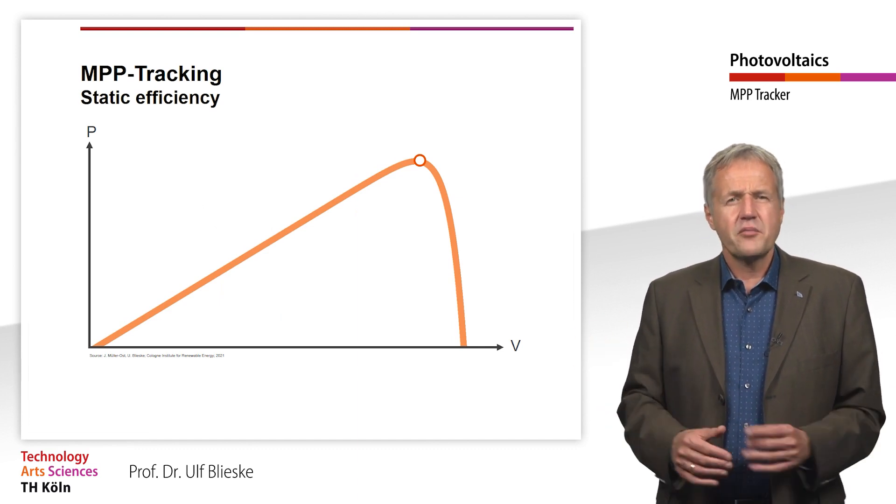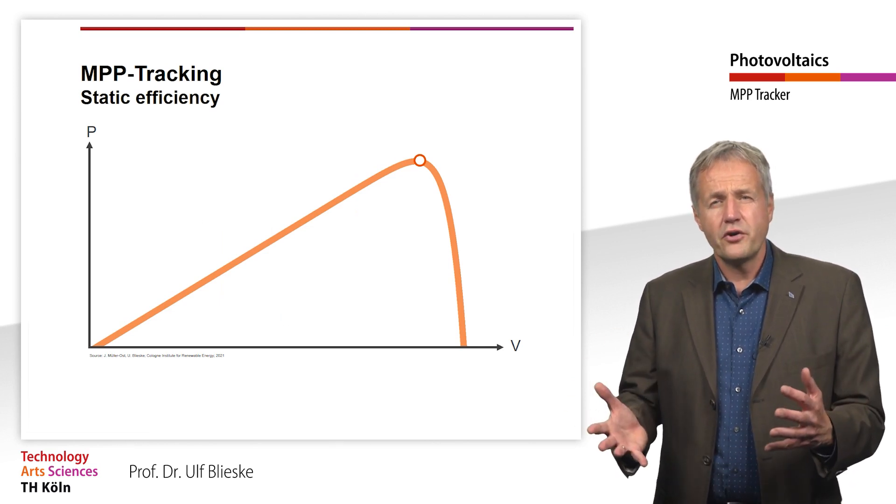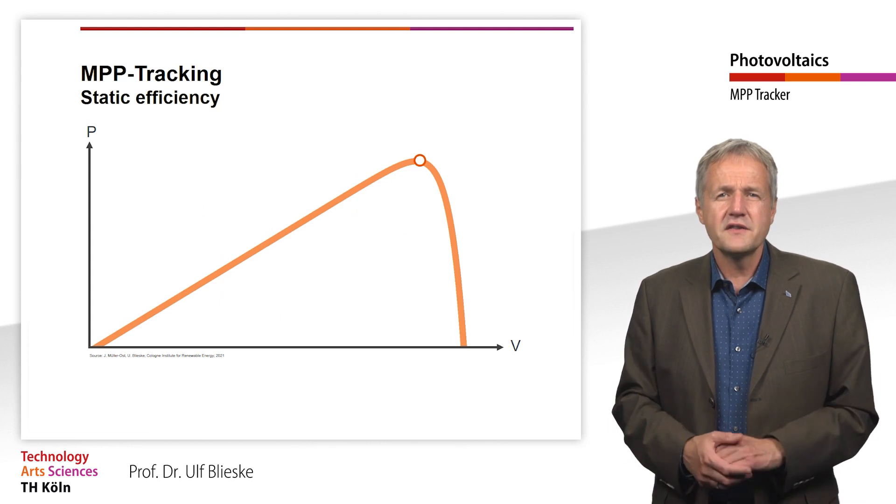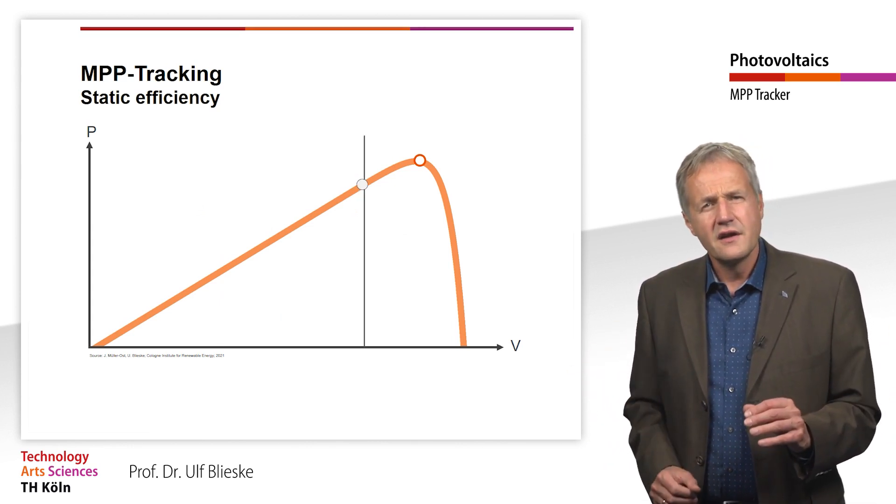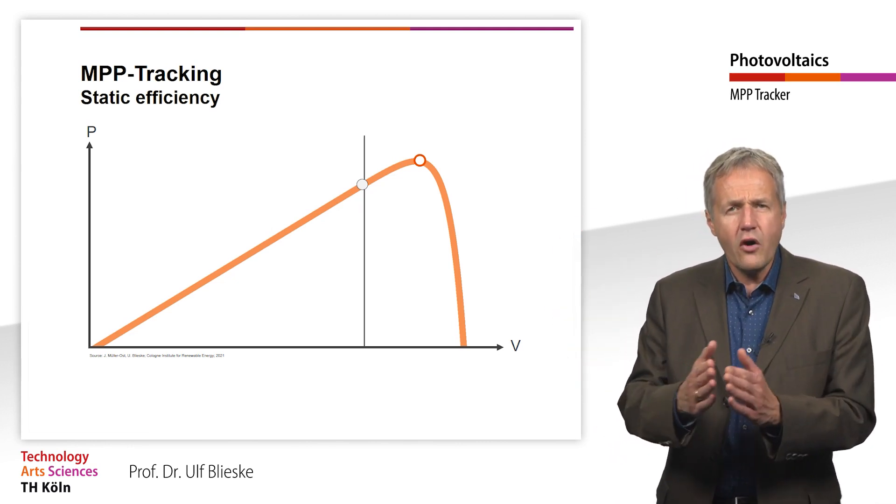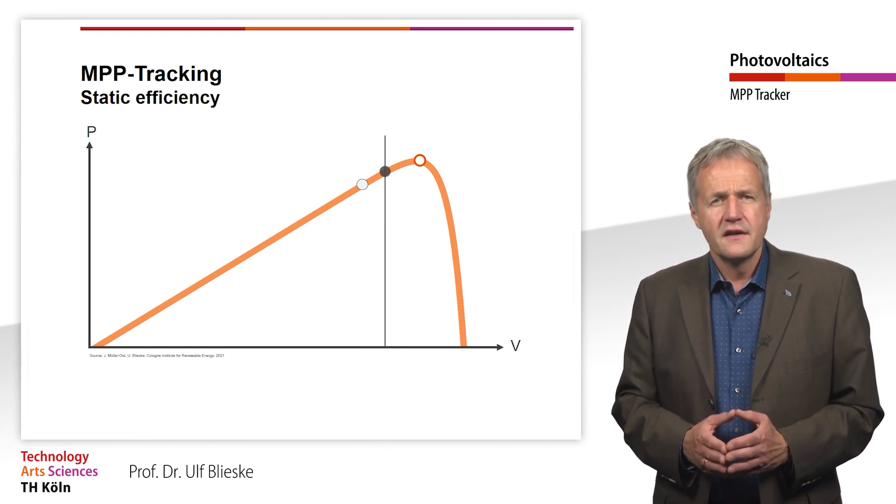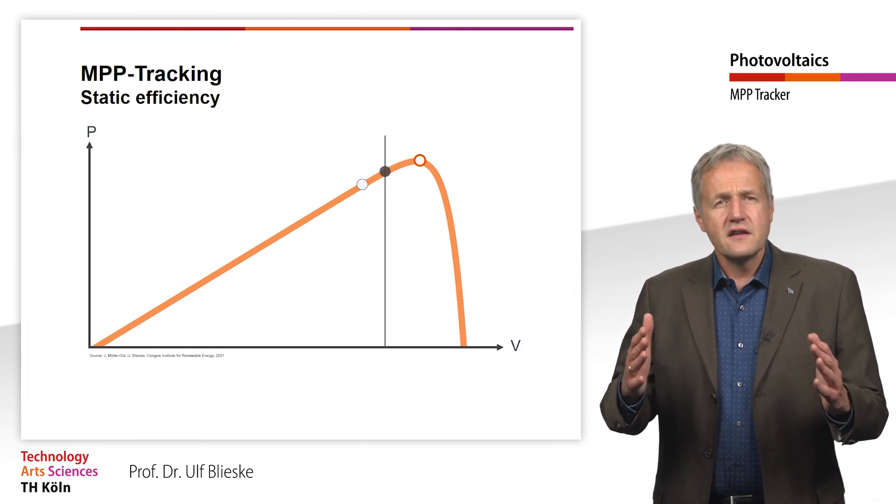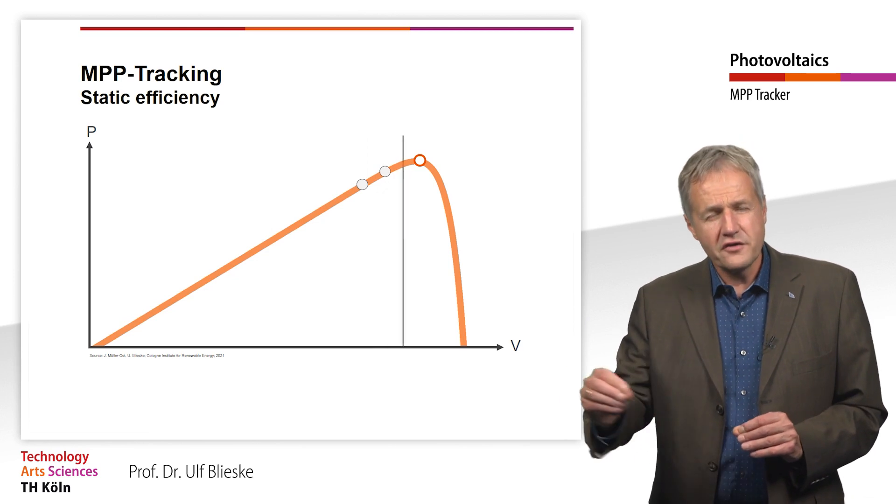There are many different approaches. One that is often used is the so-called perturb and observe method. First, the power is determined at some point on the IV curve. Then the resistance on the solar module is changed in small steps and the new module power is determined. If the power is higher than before, then the surge direction is correct and the resistance is changed further in this direction.